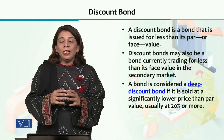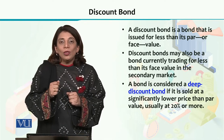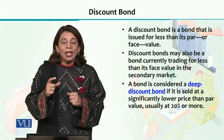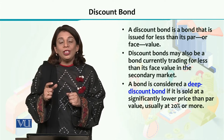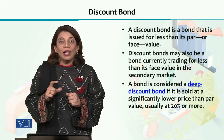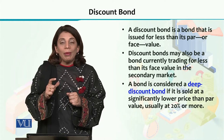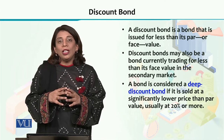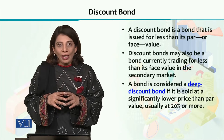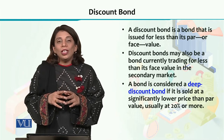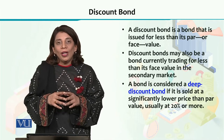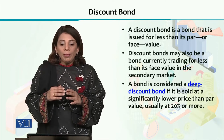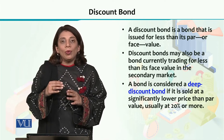Discount bond को हम deep discount bond भी बोलते हैं, मगर deep discount bond वो होता है जिसकी market price उसके face value से कई गुना — यहां तक कि 20 फीसद या उससे भी ज्यादा का फर्क रखती हो। मतलब है कि अगर आपके पास एक bond है जिसका face value 100 rupees है, और उसकी कीमत market में 80 rupees या उससे भी कम है, तो ऐसे bond को हम deep discount bond बोलते हैं।